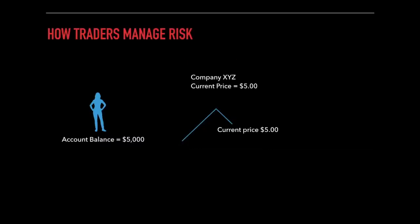Oftentimes, traders take positions using their entire account balance to capture a quick short-term price movement. For example, let's say a trader has an account balance of $5,000 and they want to buy a stock currently priced at $5. If they use their entire account balance, they would be able to buy 1,000 shares — $5,000 divided by $5 equals 1,000 shares.